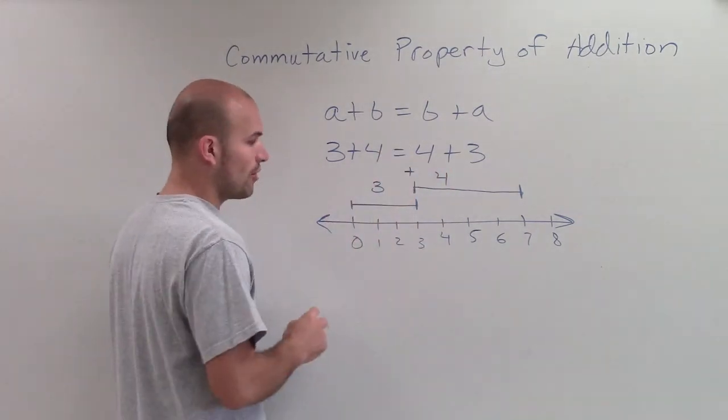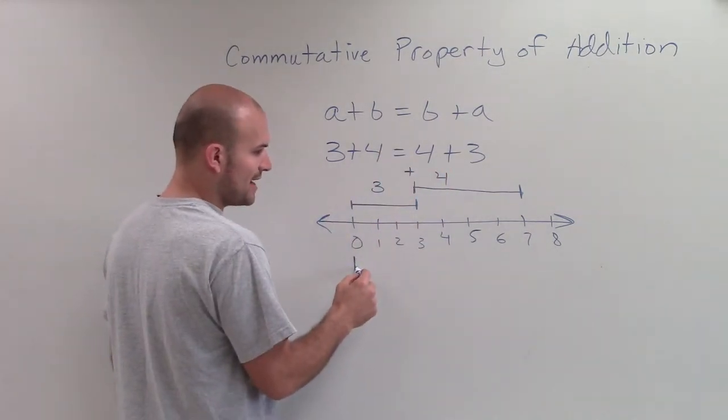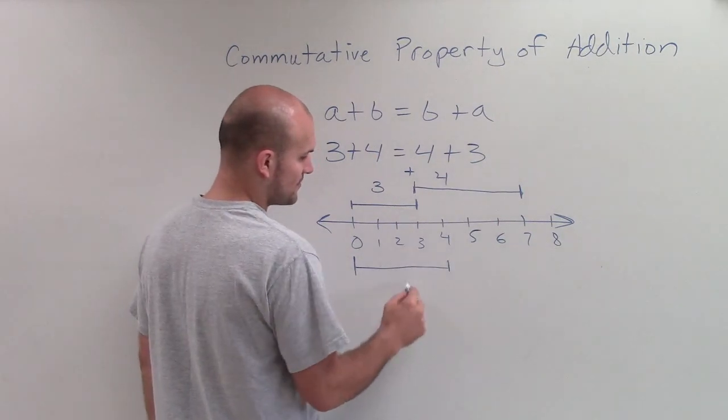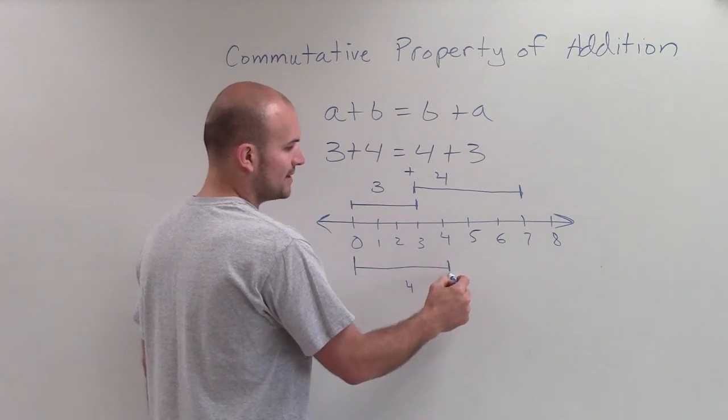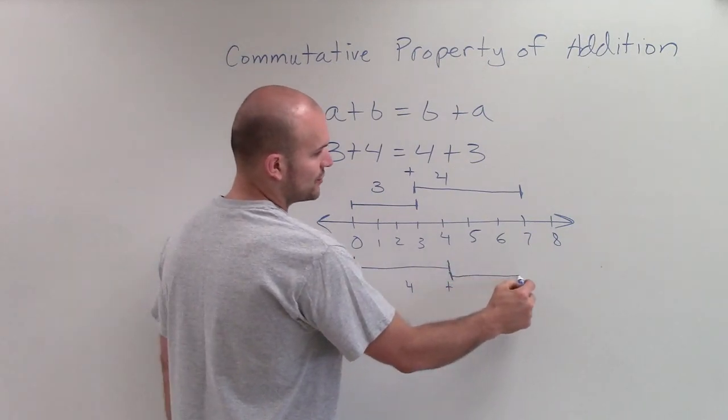Now, if I want to do 4 plus 3, I'll do that on the bottom. I'll go 4 units, and then now I'm going to add an extra 3 more units, which from here would be 1, 2, 3.